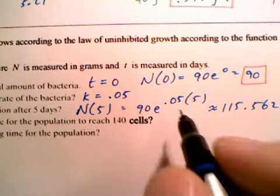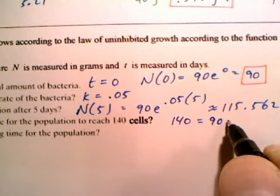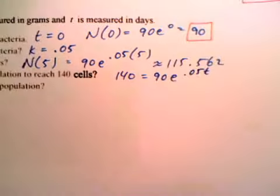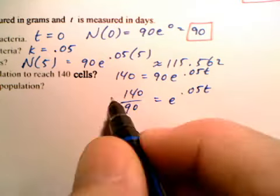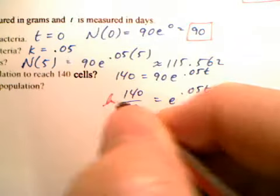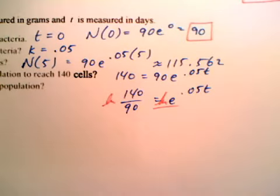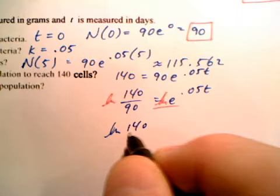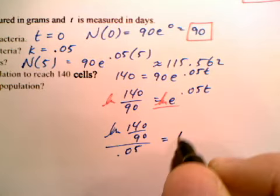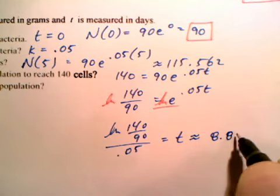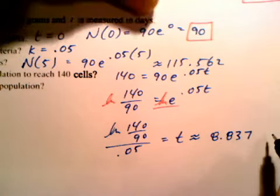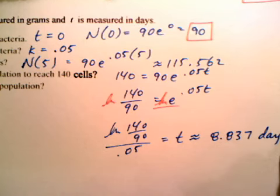And then how long will it take for the population to reach 140? So 140 equals, we're starting with 90, e to the .05 times T. If we solve that, we're going to divide both sides by 90. And then we're going to take the natural log of both sides. The natural log and the e cancel each other out. We're going to divide both sides by .05. That gets us our T. And we plug that in. 140 divided by 90, ln of that, divide by .05. And we get 8.837. That's days.